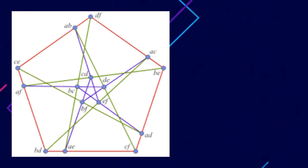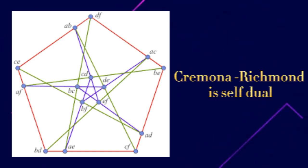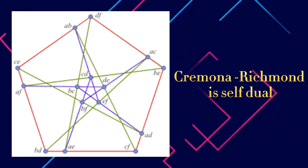A Cremona-Richmond configuration consists of 15 lines and 15 points, having three points on each line and three lines through each point, and containing no triangles. The Cremona-Richmond configuration is self-dual: it is possible to exchange points for lines while preserving all the incidences of the configuration.